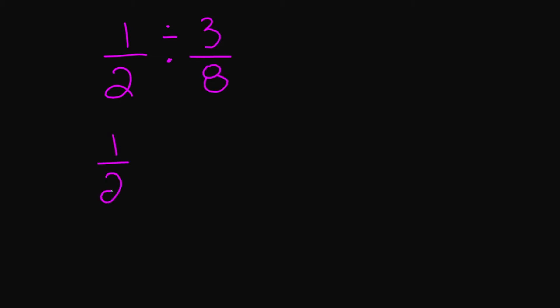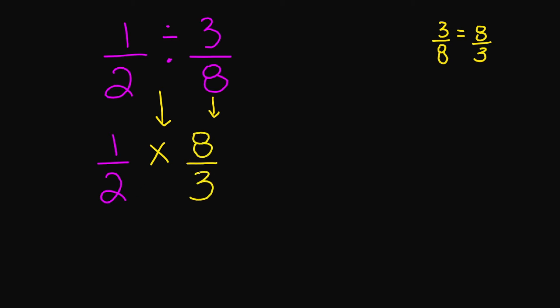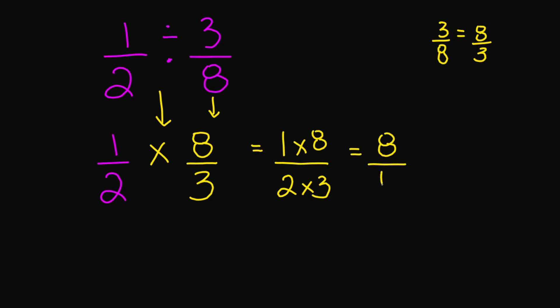So let's look at our first example when it comes to dividing. If we have one over two divided by three over eight, first I'm going to keep my one over two. My division sign is going to turn into multiplication, so this is going to be one over two times the reciprocal of three over eight, which is eight over three. So we have one over two times eight over three. Multiply across: numerator is one times eight, denominator is two times three. One times eight equals eight, and two times three equals six. I can simplify eight over six because two goes into both eight and six. Eight divided by two is four, and six divided by two is three.